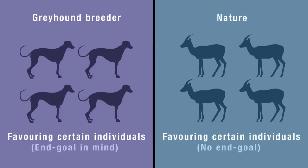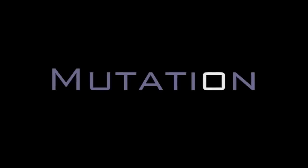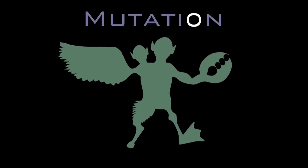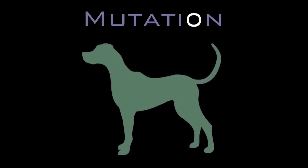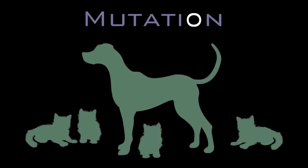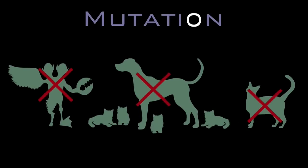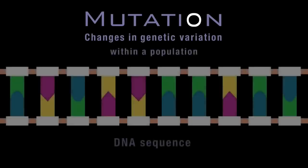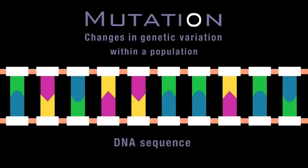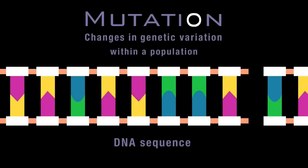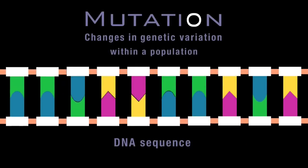Before saying more about natural selection, it's worth addressing another commonly misunderstood term: mutation. Many think that when biologists talk about mutation, they're referring only to dramatic malformations like animals with extra limbs or heads, or far-fetched scenarios like dogs producing cats or even morphing into cats. These are misconceptions. Mutations are simply changes in genetic variation within a population, brought about by insertions, deletions, and recombinations of the DNA sequence.